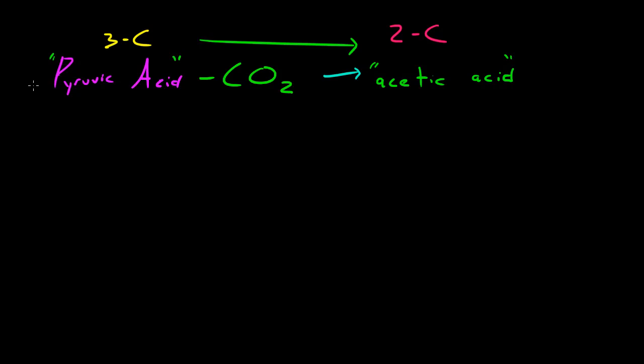After this, the acetic acid is going to combine with a molecule called coenzyme A. Right now we have your acetic acid. It's going to combine with coenzyme A. When you have acetic acid combining with coenzyme A, you end up with a molecule called acetyl CoA. This means acetic acid acetyl group plus CoA stands for coenzyme A.